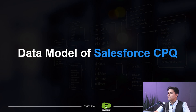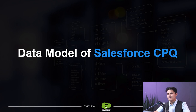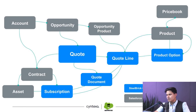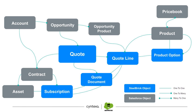Let's talk about the data model of Salesforce CPQ. I'll explain what's underneath it. There's Account, Opportunity, and Opportunity Product, and then from Opportunity, a Quote gets created. Inside the Quote there are different Quote Documents that you send to your customers, and accordingly you get an approval based on that.